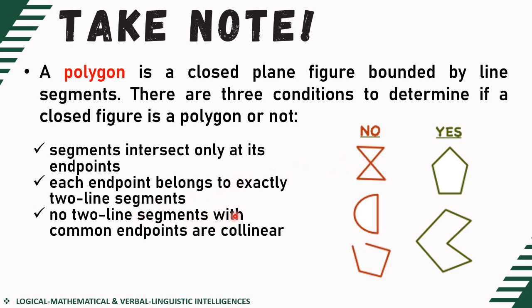And then no two line segments with common end points are collinear. There should be no two line segments with common end points that are collinear. As you can see, this segment and this segment have a common endpoint here, but they are collinear. So that means it does not satisfy the condition for a closed figure to be a polygon.